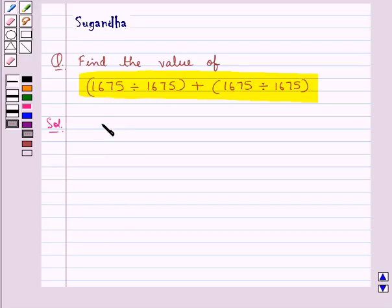We have to find the value of 1675 divided by 1675 plus 1675 divided by 1675.